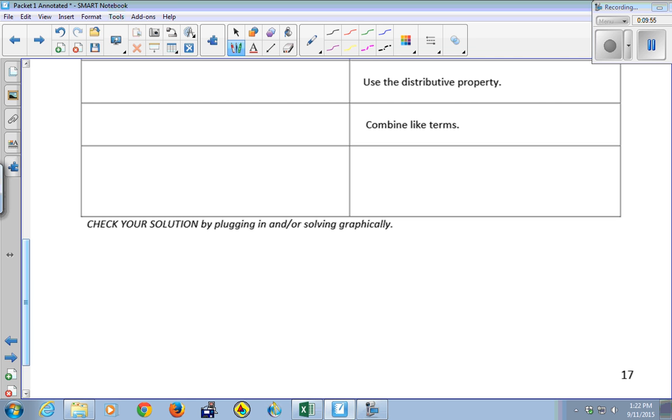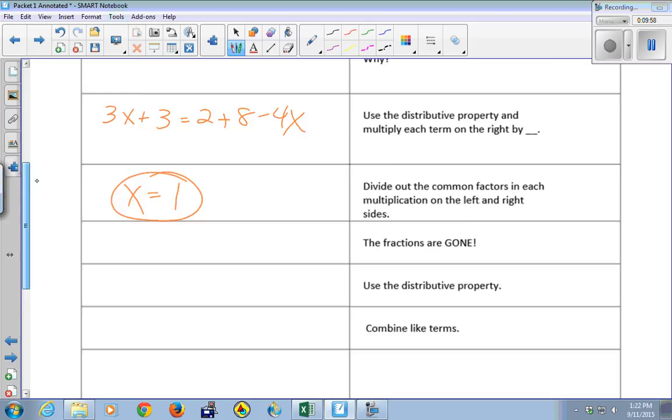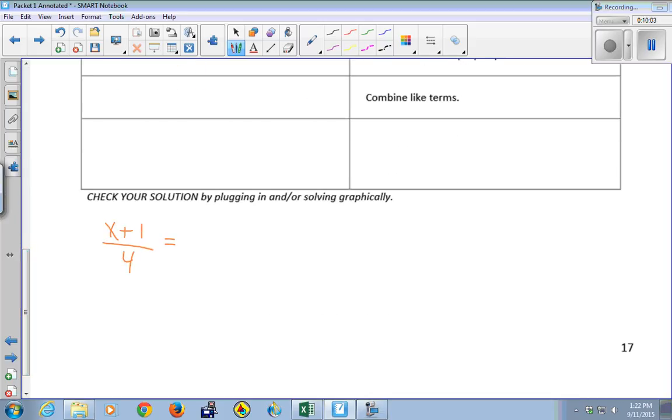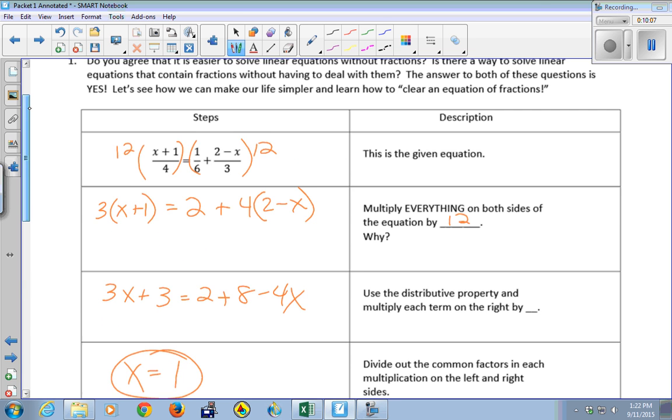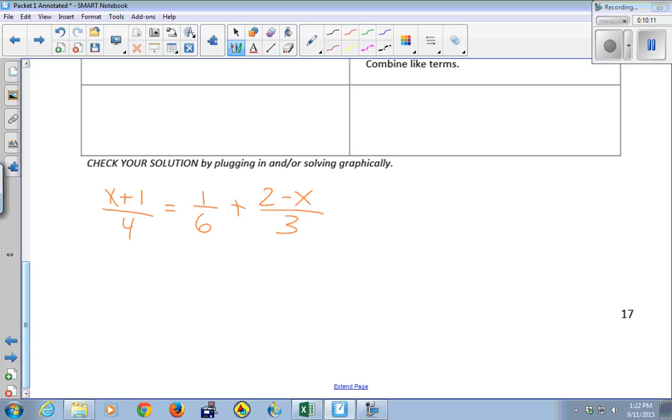We should always check our solution. So our original equation was (x+1)/4 equals 1/6 + (2-x)/3. And we got x equals 1, so we should be able to go back and put a 1 in for all the x's and show that the two sides of the equation are equal. So (1+1)/4, that's 1/2. 2/4 is 1/2. And 1/6 + 1/3, which is 3/6 or 1/2. Check. This is a good habit to get into. You can never go wrong. You'll know whether you got the problem right or wrong, no matter what kind of equation you're solving.